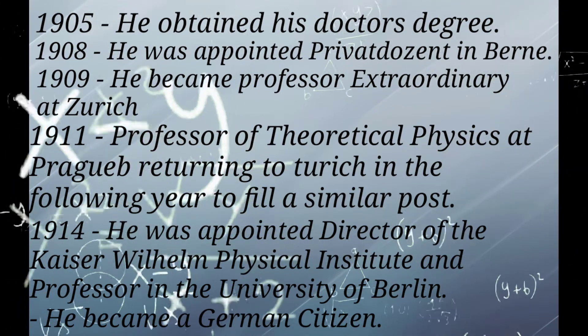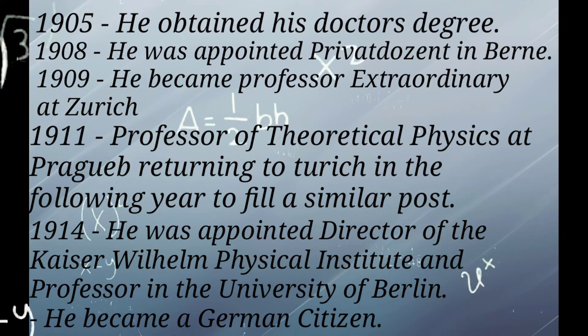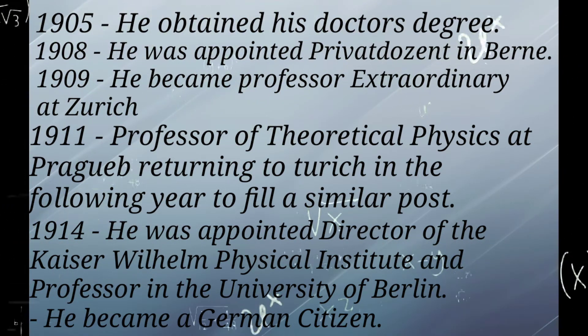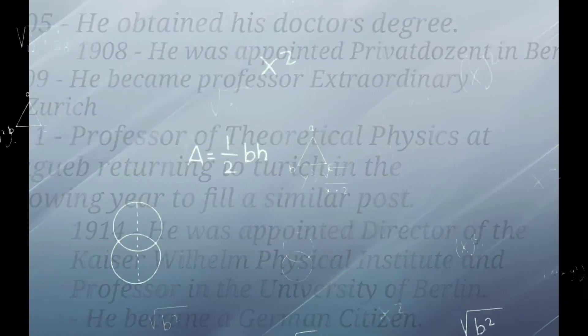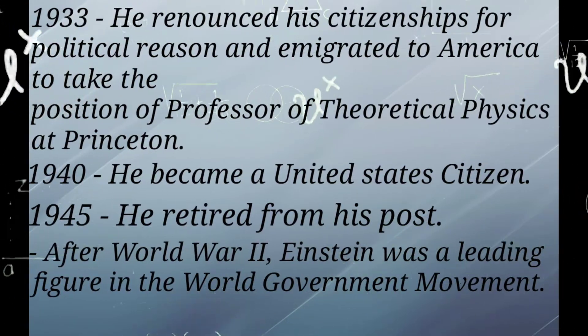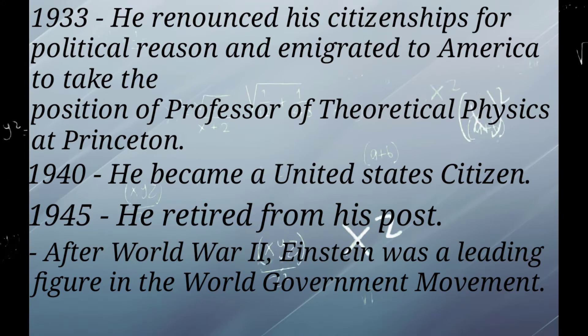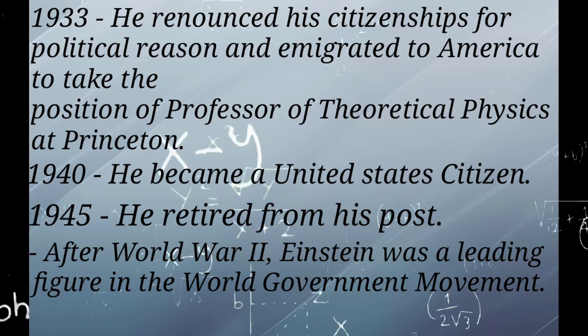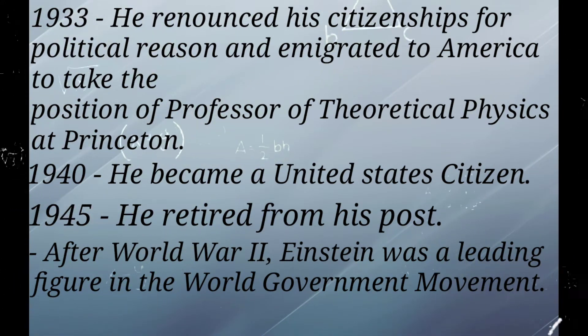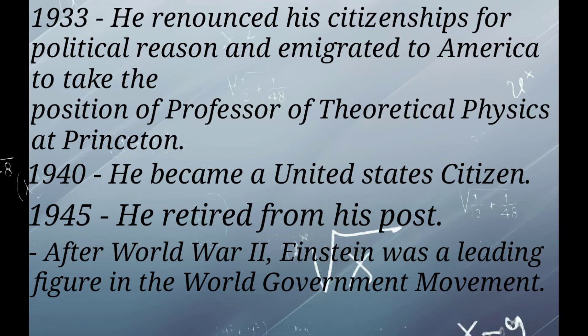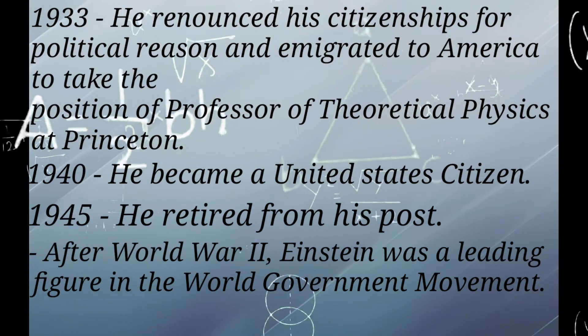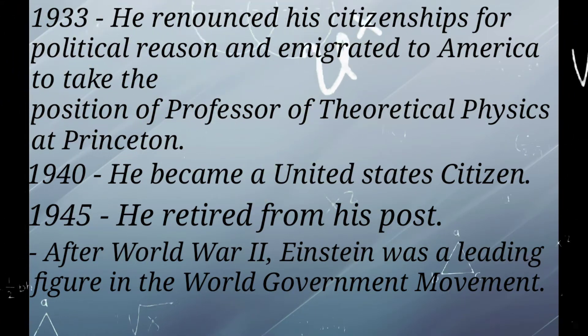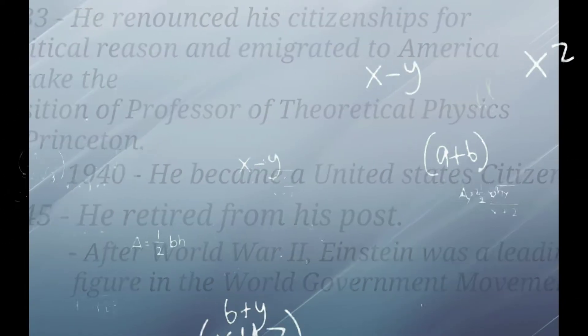In 1914, he was appointed Director of the Kaiser Wilhelm Physical Institute and Professor in the University of Berlin. He became a German citizen the same year. In 1933, he renounced his citizenship for political reasons and immigrated to America to take the position of Professor of Theoretical Physics at Princeton. In 1940, he became a United States citizen. In 1945, he retired from his post. After World War II, Einstein was a leading figure in the world government movement.